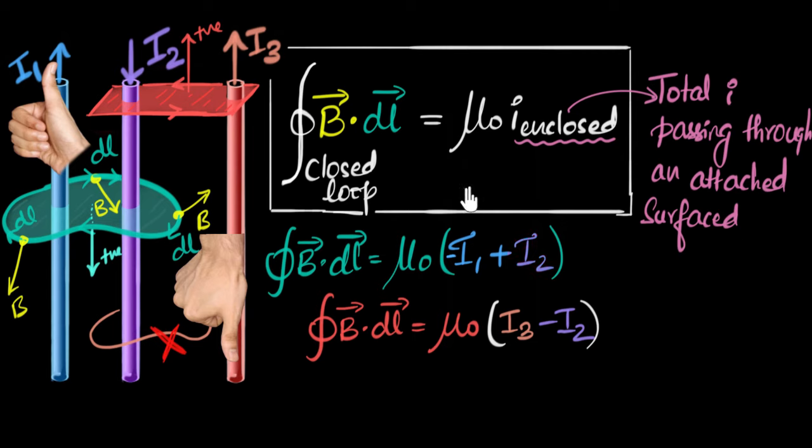And before we wind up, I wanna talk about some important characteristics of this law. First of all, this law can be derived from Biot-Savart law. And you can derive Biot-Savart law from this law. So they're both equivalent. And we use whichever one is more convenient in our given situations.